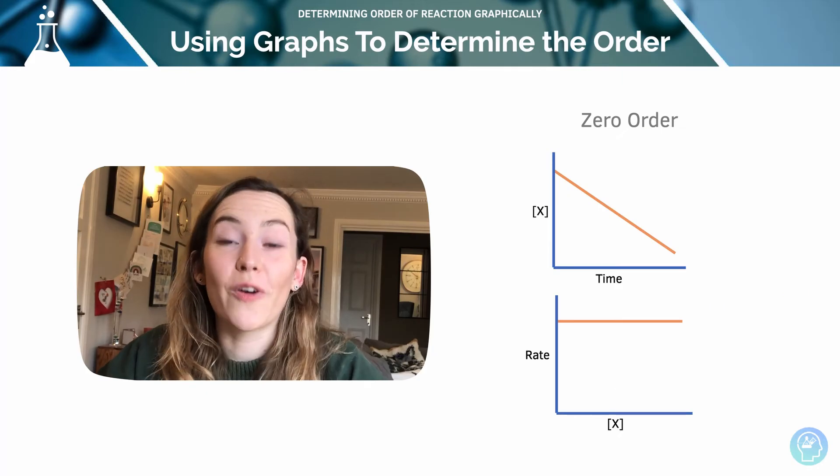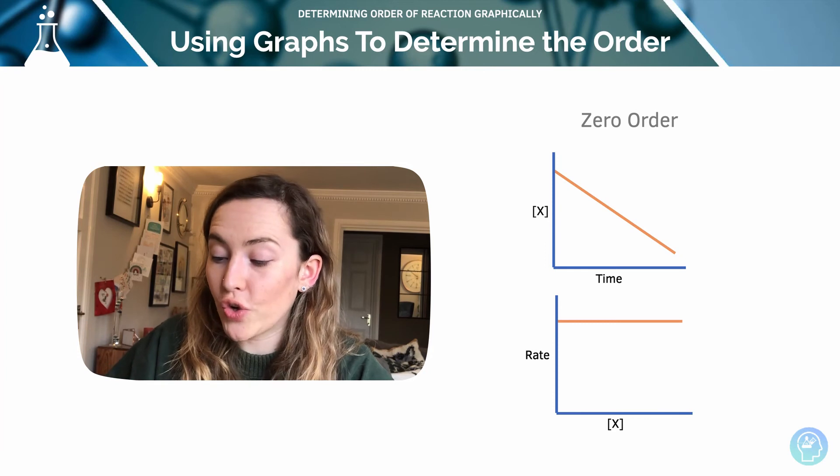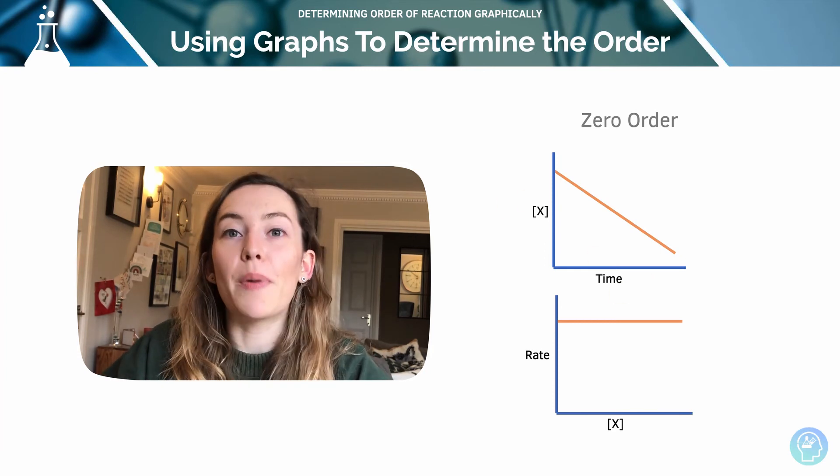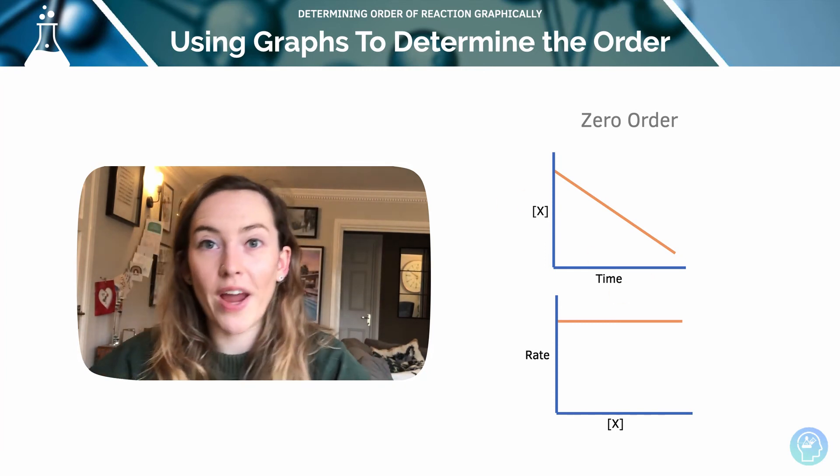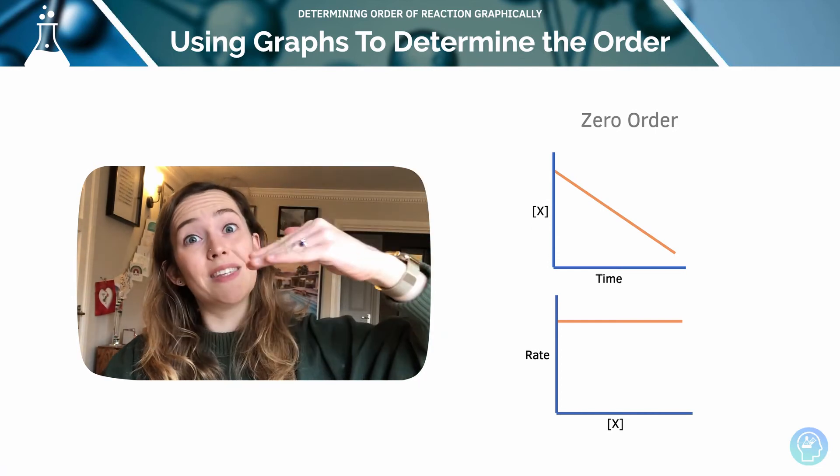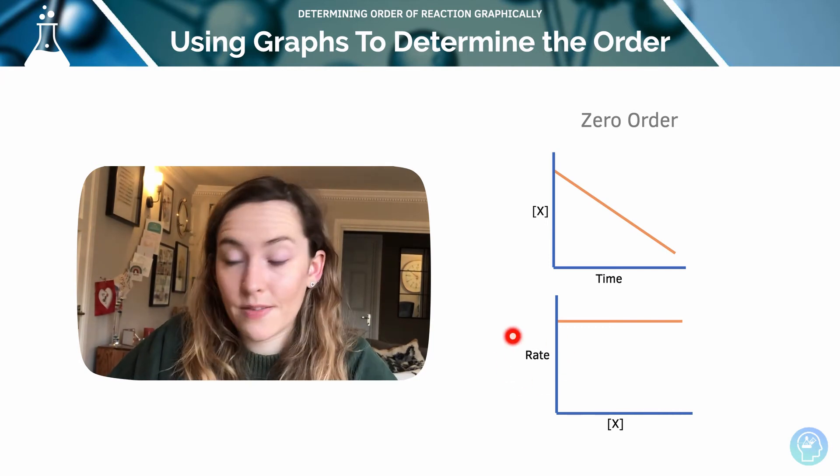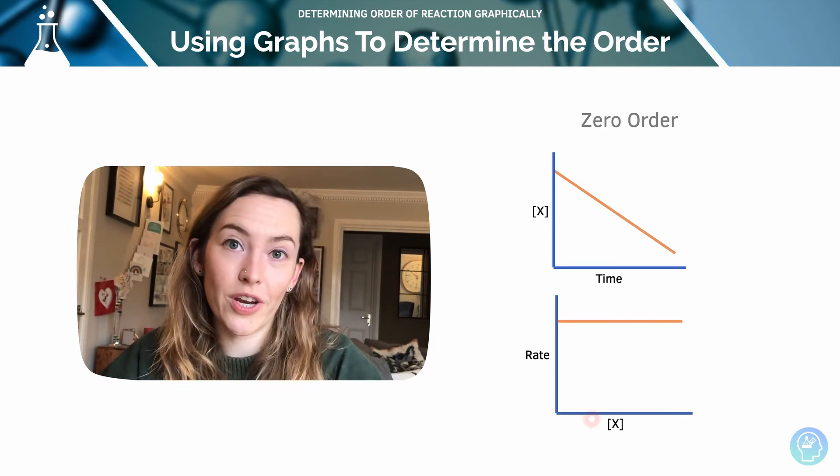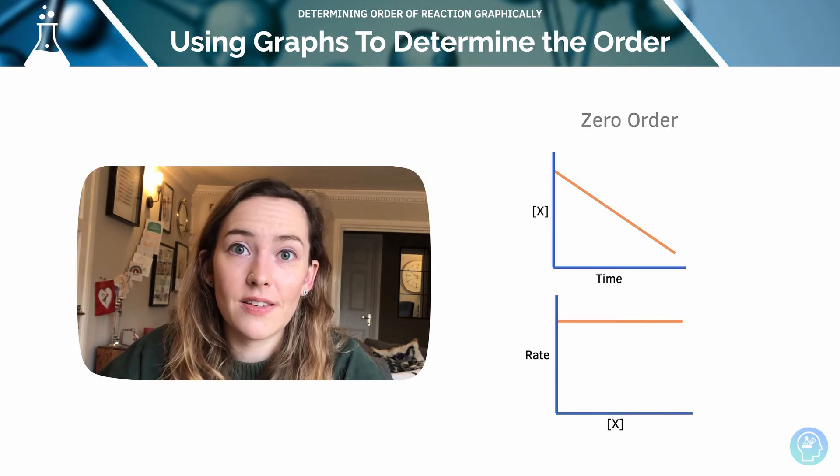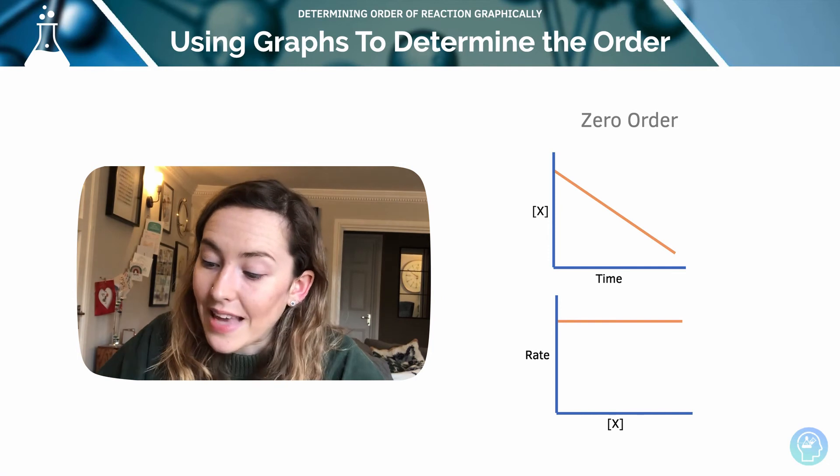Once we've got our experimental results, we can plot a graph. So initially, we'll probably plot a concentration versus time graph. But using those particular gradients, as I showed you the previous slide, we can calculate the gradient at specific times and then plot that rate, the gradient, against the concentration. And that graph allows us to see the order with respect to the reactant being investigated.